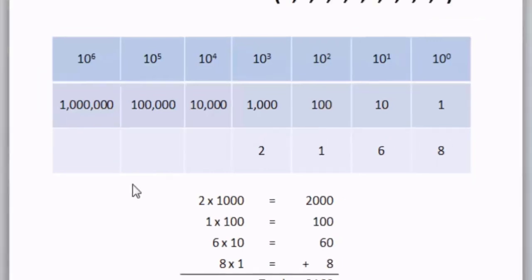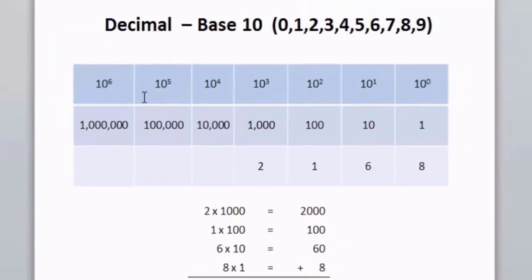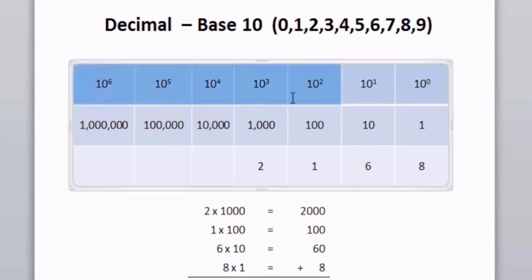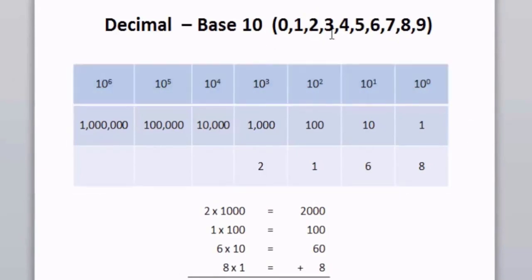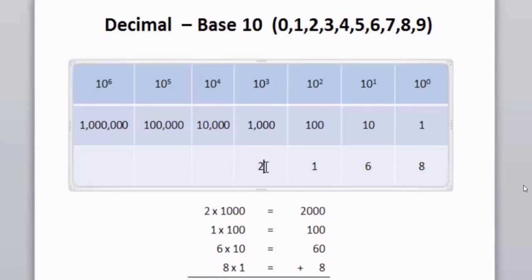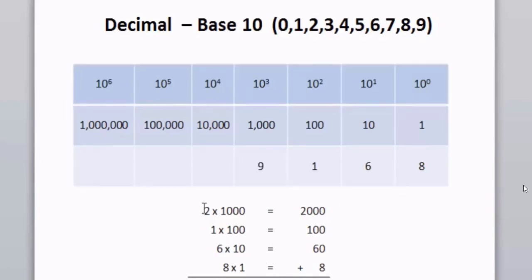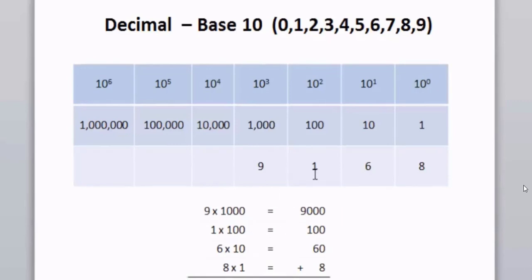The decimal system is base 10. It's based on the fact that you have powers of 10, but more importantly, you have 10 characters or 10 numerals in this counting system — from 0 all the way up to 9. So that means that in each place value, you can have anywhere from 0 up to 9. In other words, if I had the number 9,168, I'd simply replace the 2 with a 9, and now I have 9 one-thousands totaling 9,000. So in any one of these place values, you can have the number 0 all the way up to 9.